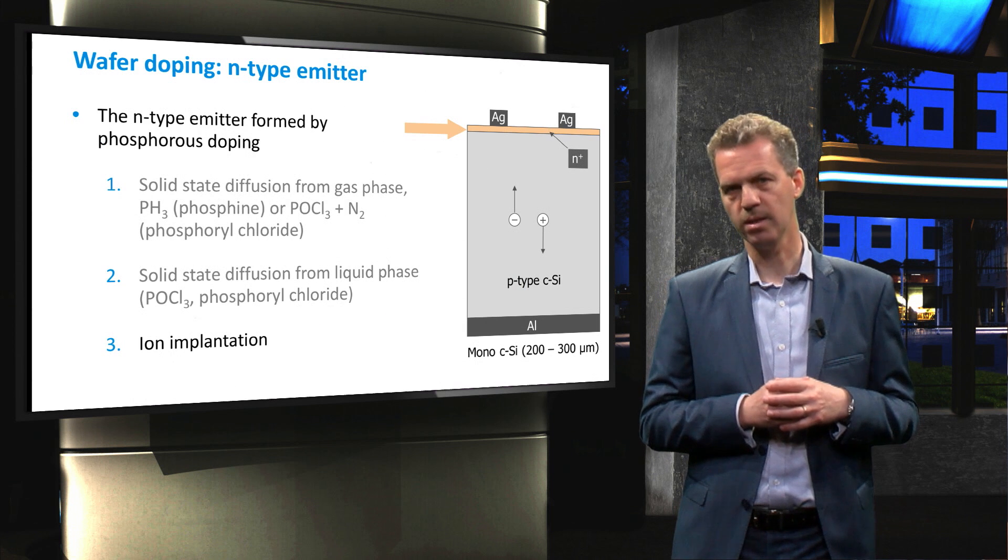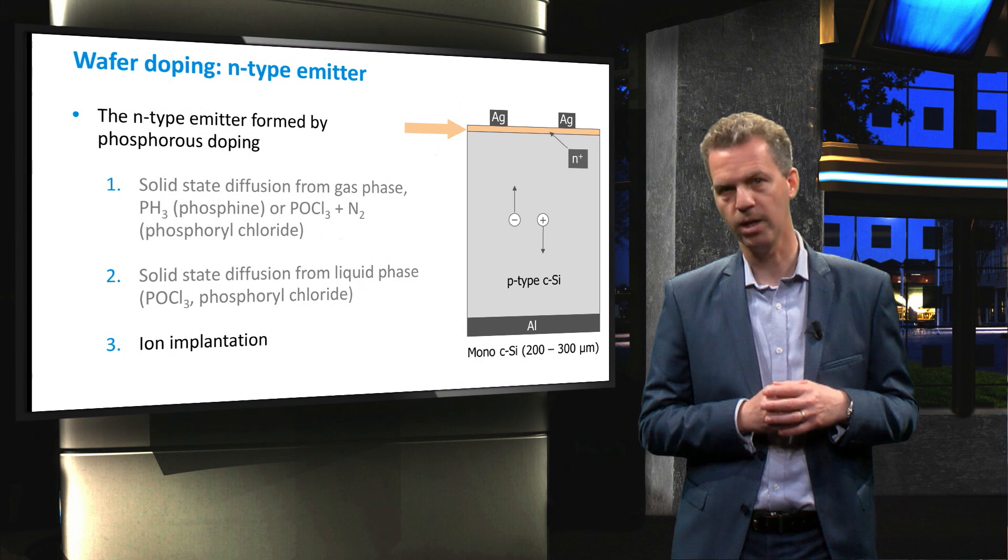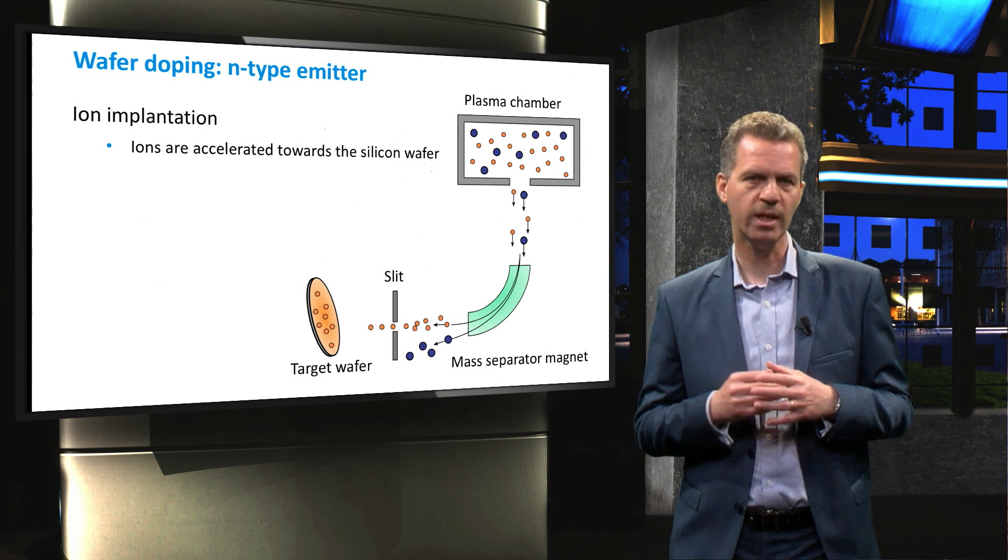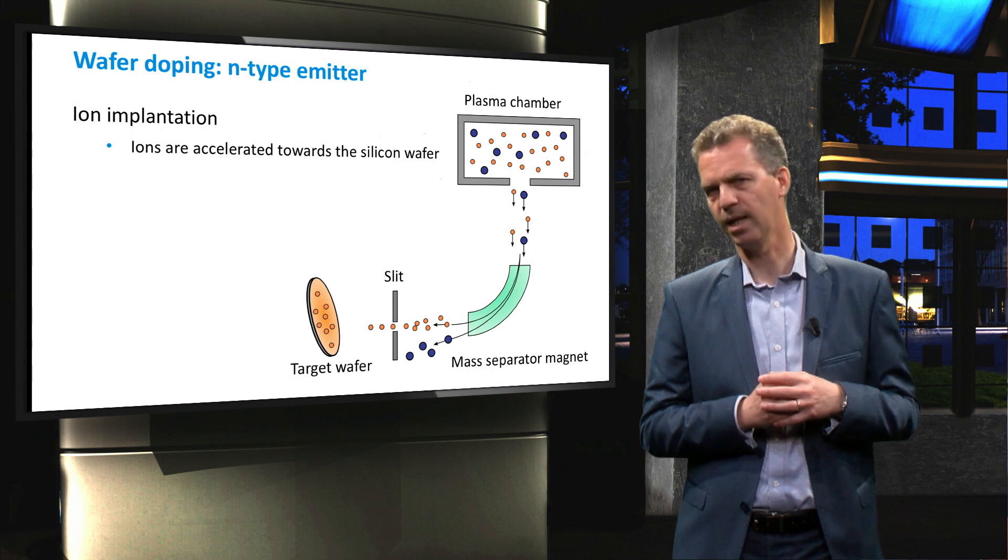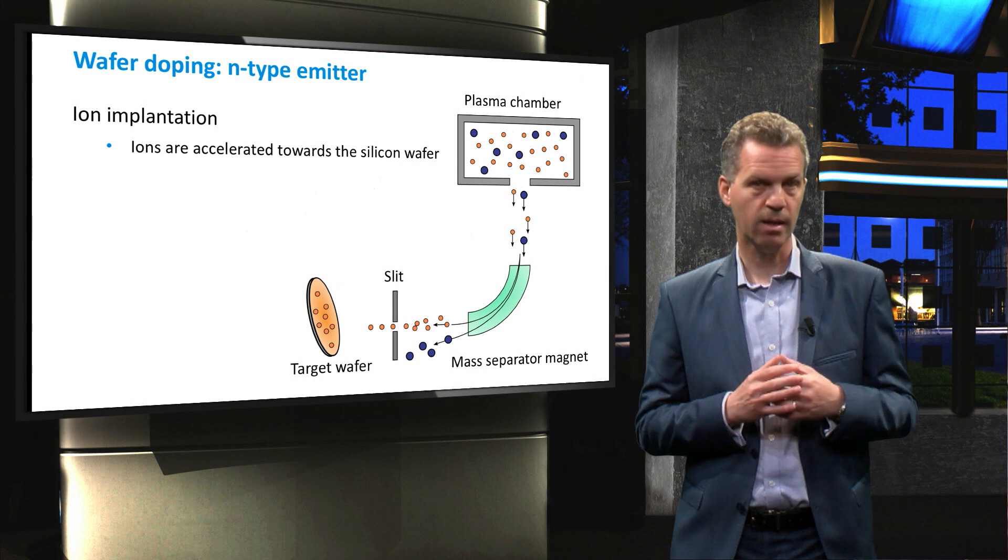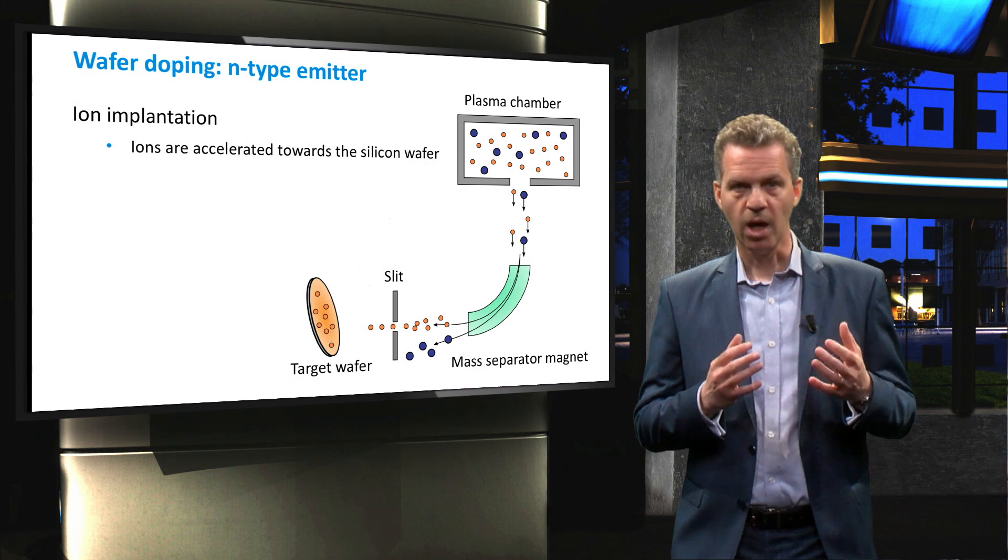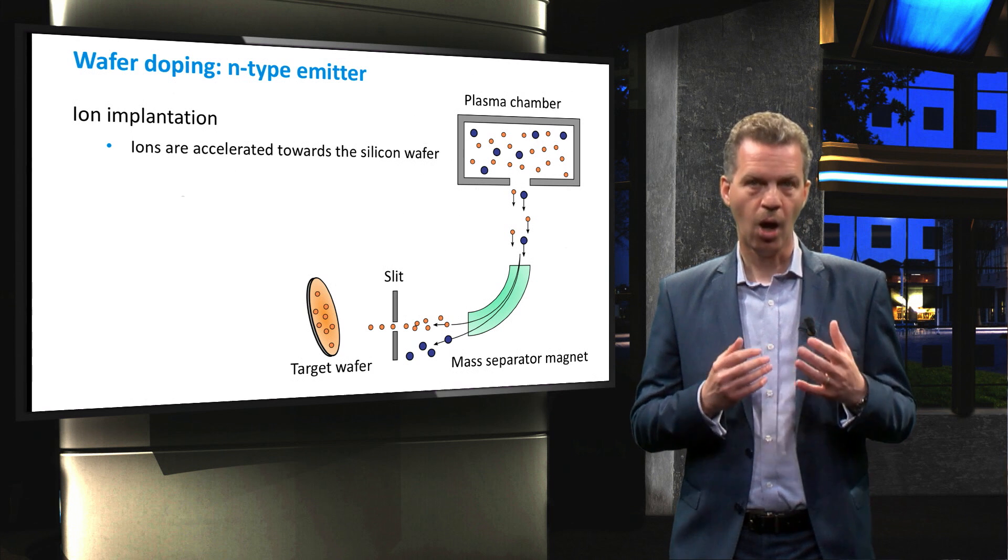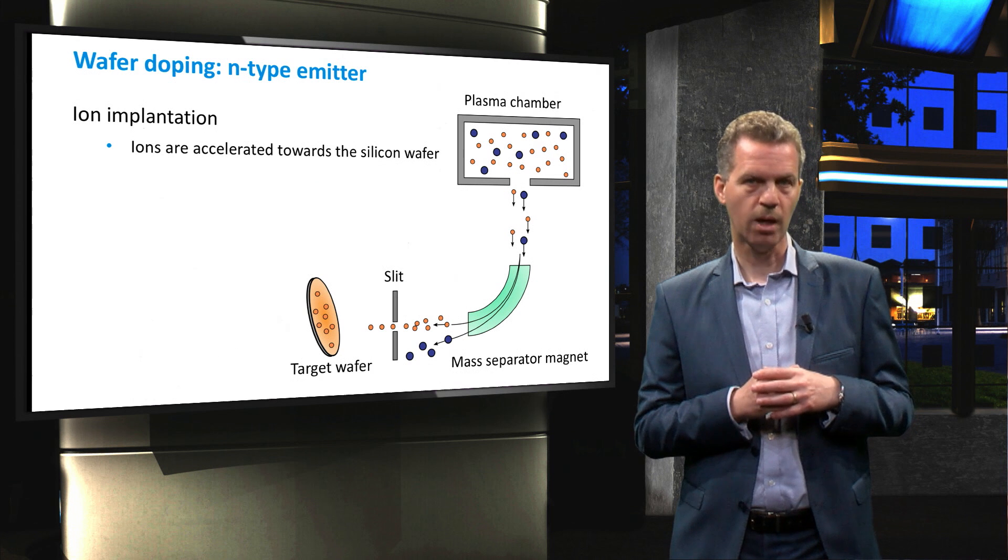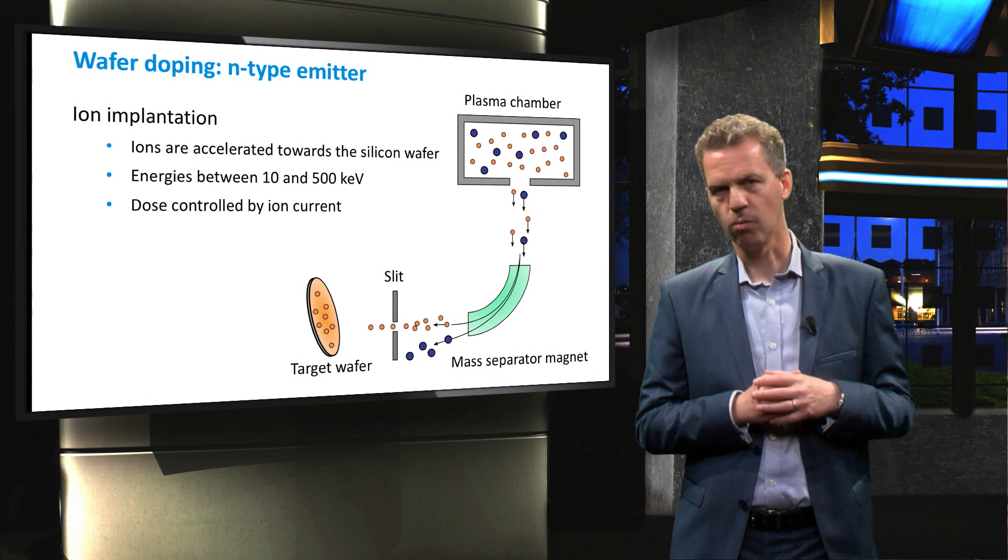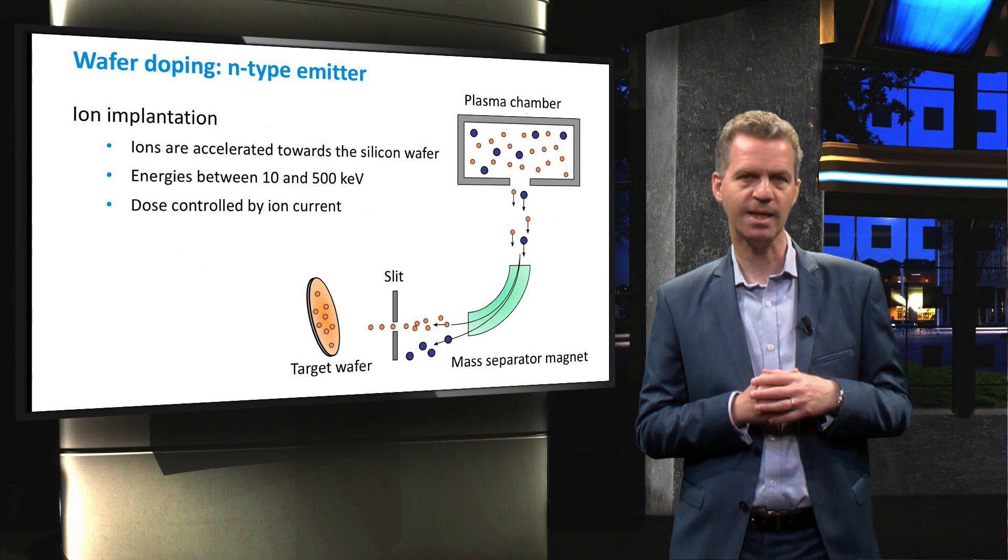The last method to form an emitter layer on a p-type wafer is ion implantation. With this method, charged particles are accelerated towards the wafer with high kinetic energy. These charged particles are formed in a plasma chamber, but there are always other elements present in the plasma. The other elements are separated from the doping ions by a mass separator magnet. Only the ions with the correct mass and charge can pass the slit before bombarding the wafer. The penetration depth of the ions can be controlled by the kinetic energy, while the dose can be controlled by the ion beam current.